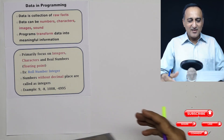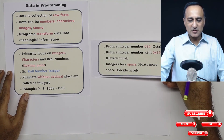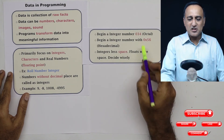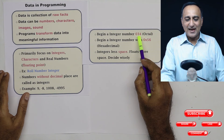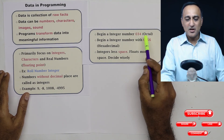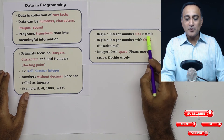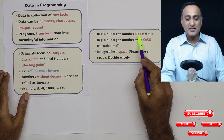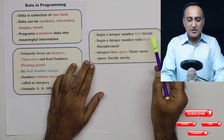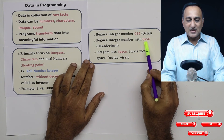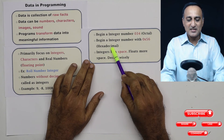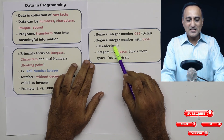C has an interesting way of dealing with integers. If you begin an integer number with zero — for example 034 — C treats it as a number belonging to the octal number system. So 034 is not 34 in decimal; it's 34 in octal. Similarly, if you begin with 0x, for example 0x56, the 0x indicates the integer is a hexadecimal number, or a number to base 16.